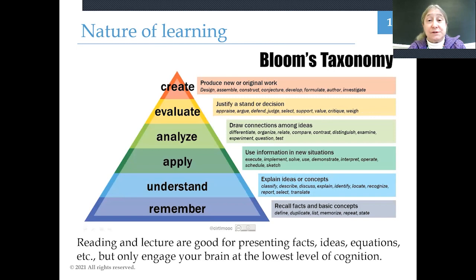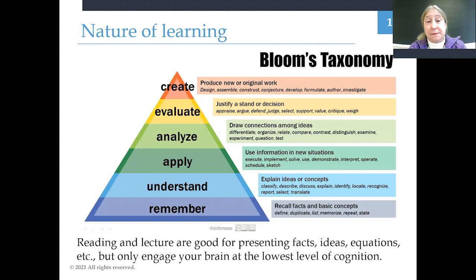In this class, we aspire to raise you up along the pyramid of what's called Bloom's Taxonomy — a way of describing different modes of cognition. The lowest level is remembering, where you can simply recall facts and concepts. The next level is being able to understand and explain those concepts to somebody else. An even higher level is being able to apply that information in new situations. As you rise further, you begin to draw connections among ideas, analyze concepts, defend decisions about the right answer, and ultimately evaluate those decisions. We aspire to raise your critical thinking skills to the level of being able to analyze and evaluate.